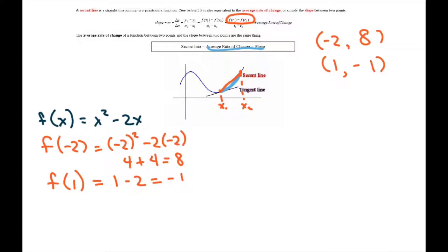So 1 is just going to be 1 squared is 1 minus 2 equals negative 1. So we have our two points, point 1 and point 2. And we just can use that equation now. Our slope formula, you get negative 1 minus 8 divided by 1 minus negative 2. So that's negative 9 divided by 3 is negative 3.